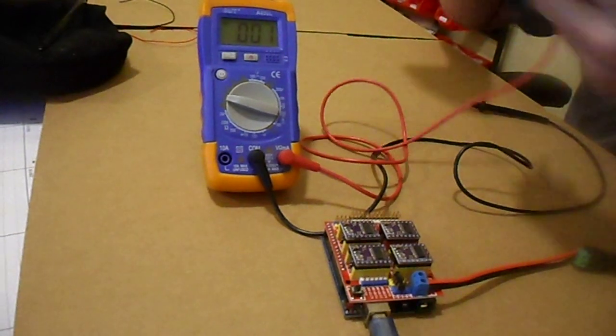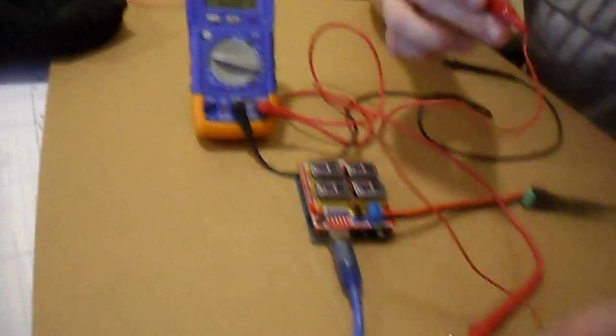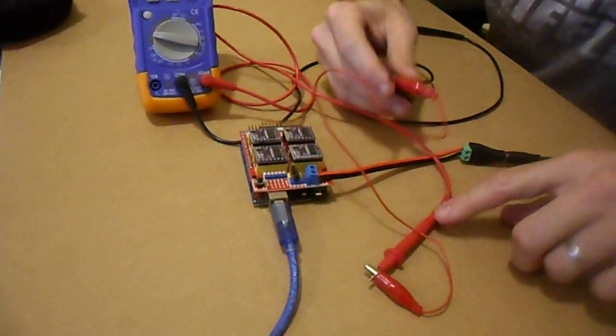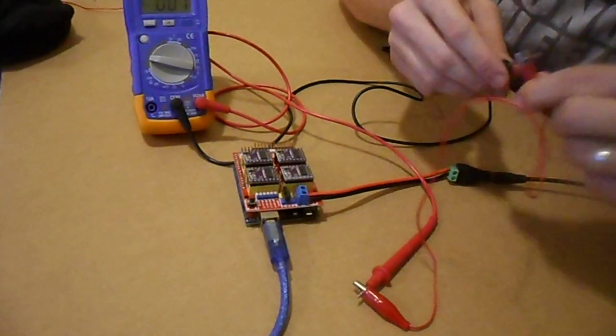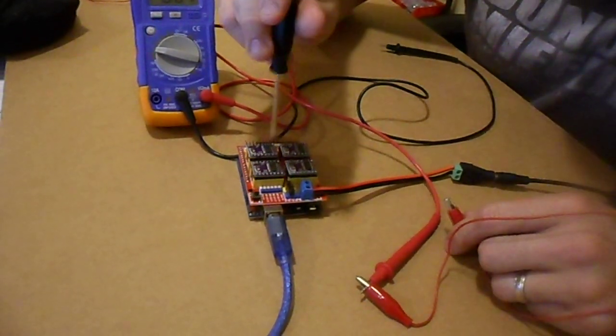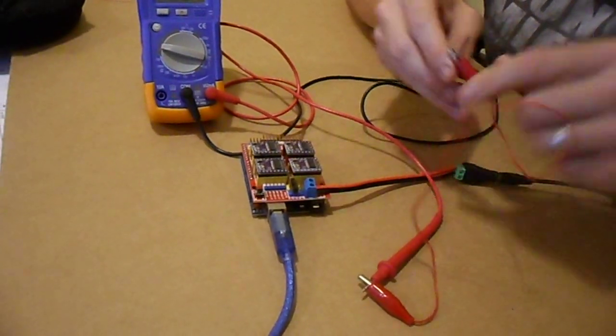So let me show you something that's going to help you through this process. You see on my red lead I've got a screwdriver alligator clipped to it. If you're just trying to take a screwdriver and turn these and then check with your lead it's going to take you a long time.